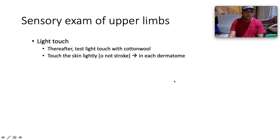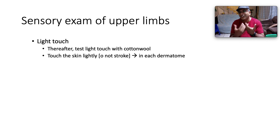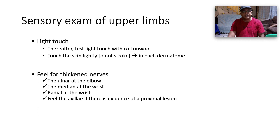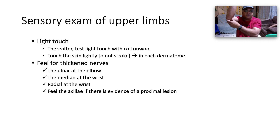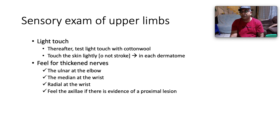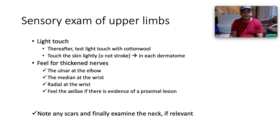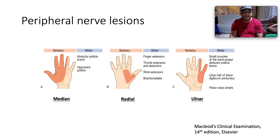For light touch, touch the skin lightly with cotton wool — don't stroke, just touch — testing each dermatome: C5, C6, C7, C8, T1, T2, T7, T10, T12. Feel for thickened nerves — test the ulnar nerve in the ulnar groove at the elbow, the median and radial nerves at the wrist, and palpate the axilla if there is evidence of a proximal lesion. Causes of thickened nerves include leprosy, Charcot-Marie-Tooth disease, sarcoidosis, and amyloidosis. Note any scars and examine the neck if relevant.